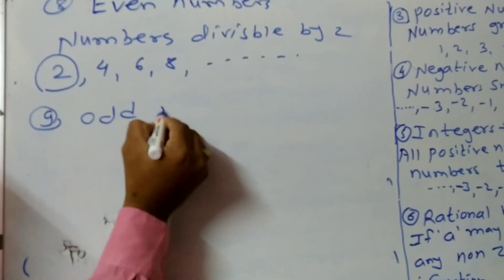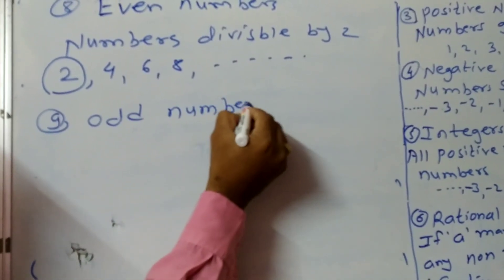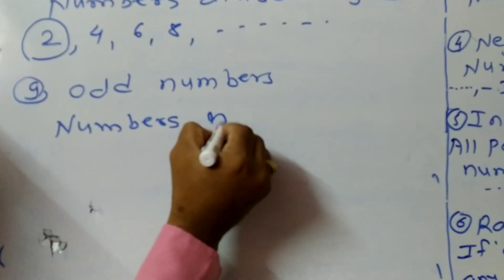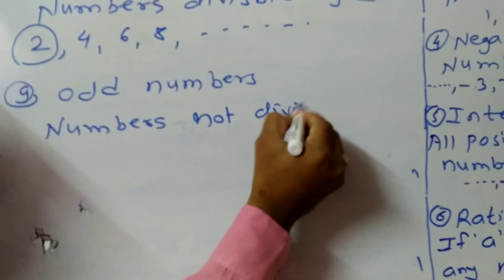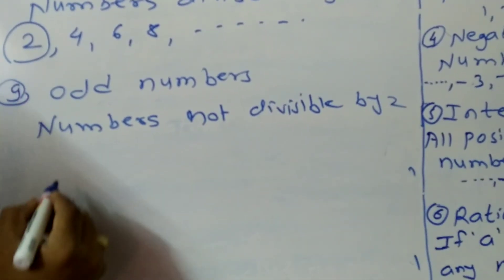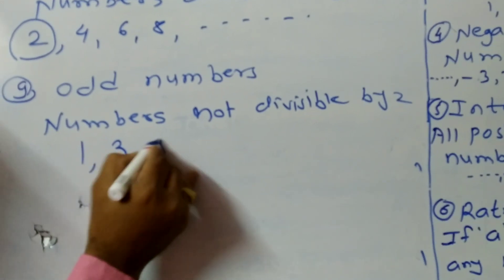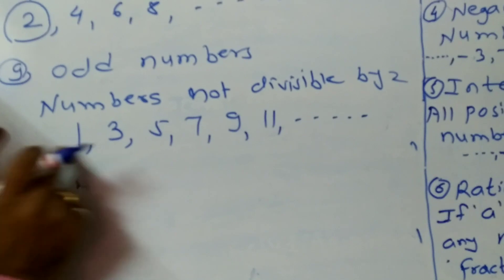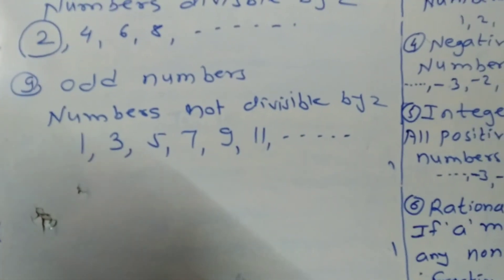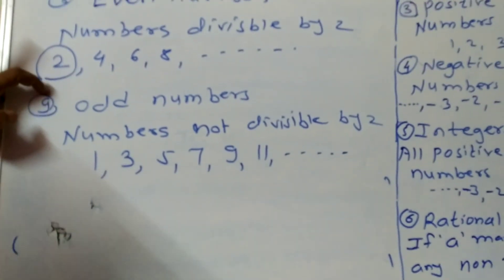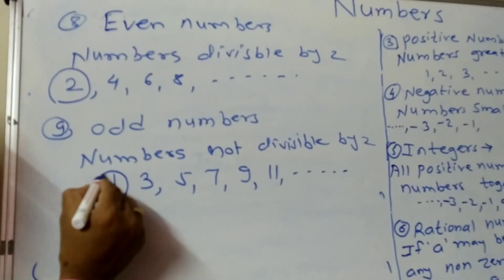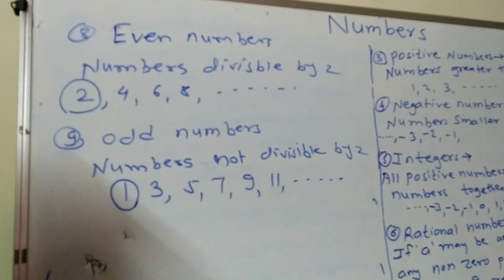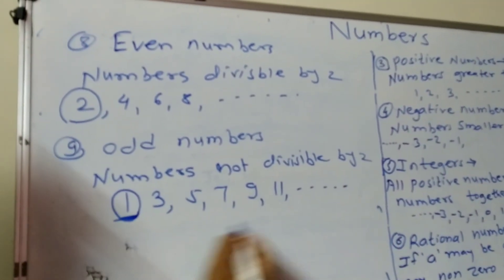The next type is odd numbers — numbers which are not divisible by 2. For example: 1, 3, 5, 7, 9, 11, and so on. These numbers are not divisible by 2 and therefore are called odd numbers. The smallest odd number is 1 and the largest odd number cannot be defined.